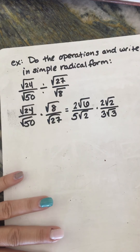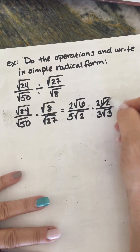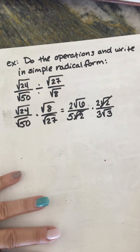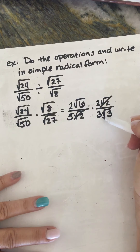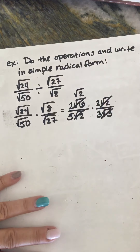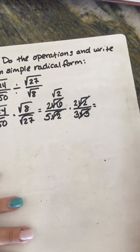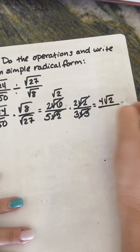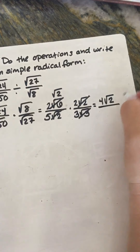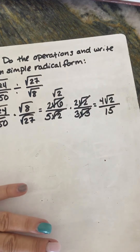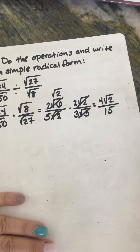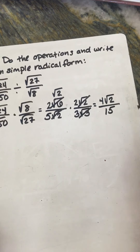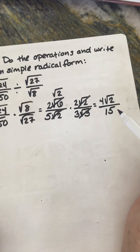Square root of 8 is 2 square root of 2, and square root of 27 is 3 square root of 3. Now we can cross cancel: square root of 2 and square root of 2 are the same so they cancel. And square root of 6 and square root of 3 — square root of 6 divided by square root of 3 becomes square root of 2. So we've got 2 times square root of 2 times 2, giving us 4 square root of 2, divided by 5 times 3 equals 15. No radicals in the denominator — we didn't even need the magic 1 this time because we canceled smartly.